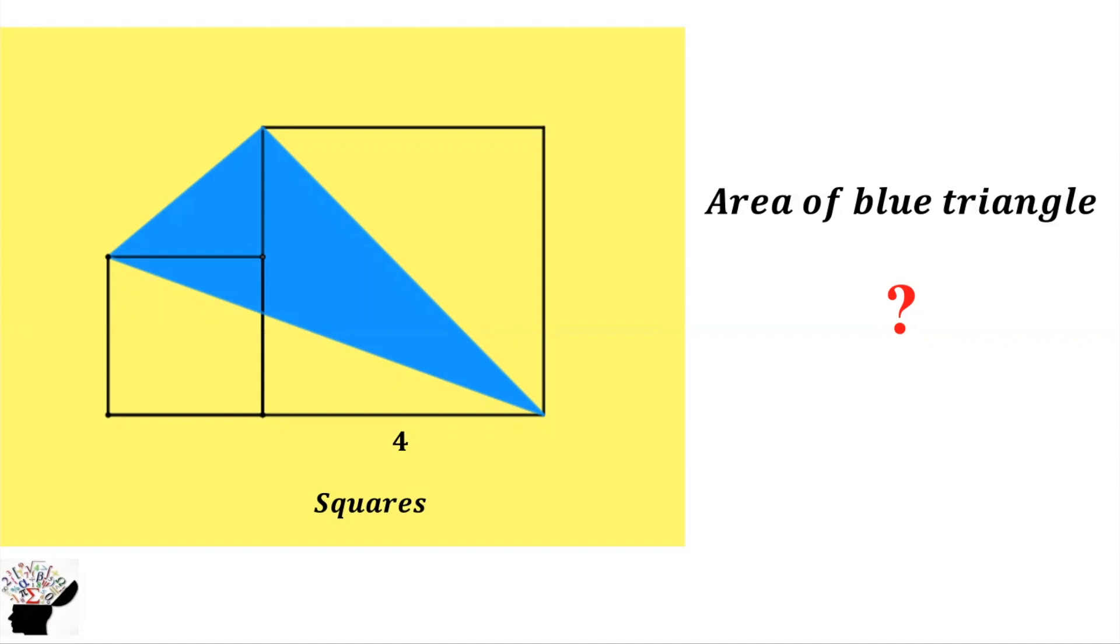First of all, we know that the triangle is inclined at 45 degrees—it's at the diagonal of the bigger square. We know that the formula for the area of a triangle is half the base times perpendicular height.